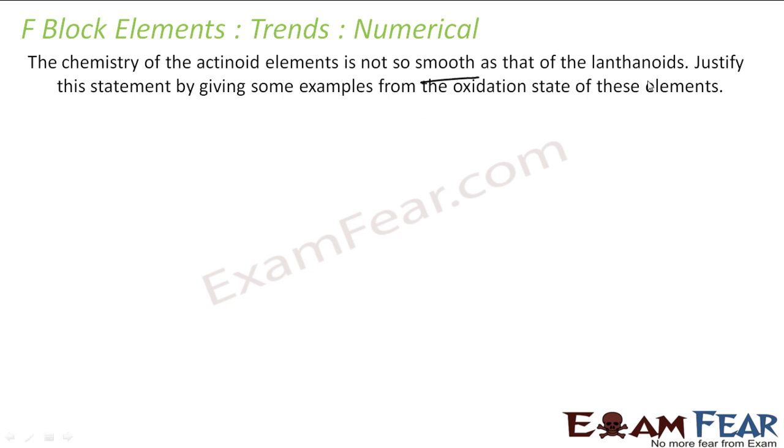The chemistry of actinide is not so smooth as that of lanthanide. Justify the statement by giving examples from the oxidation state. The lanthanides have oxidation states plus 2, plus 3, and plus 4, with plus 3 being the most common. Limited number of oxidation states, pretty easy to understand, pretty smooth.